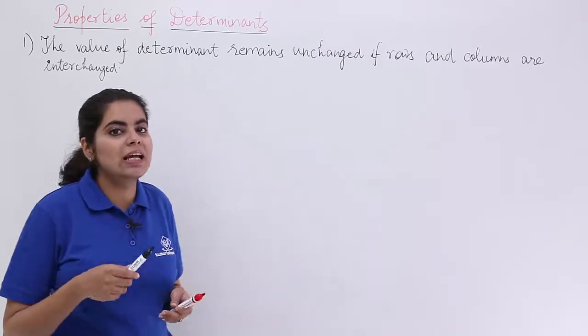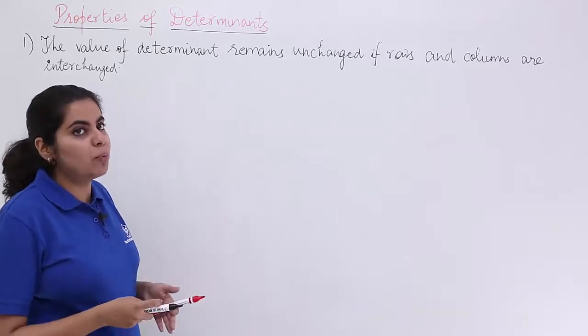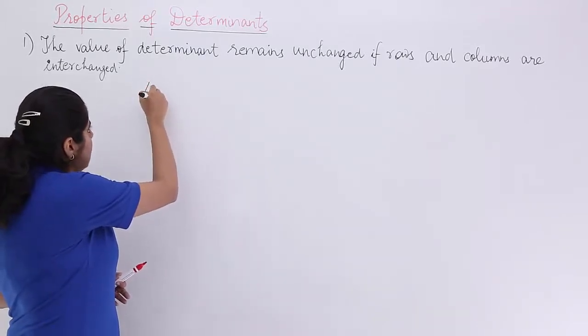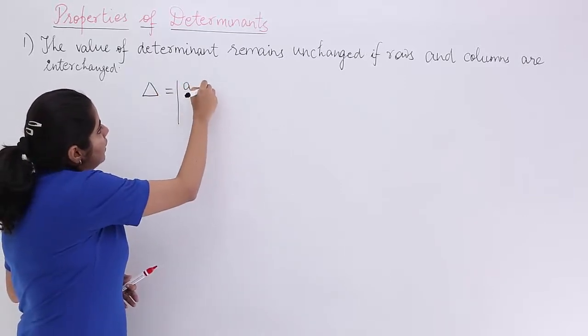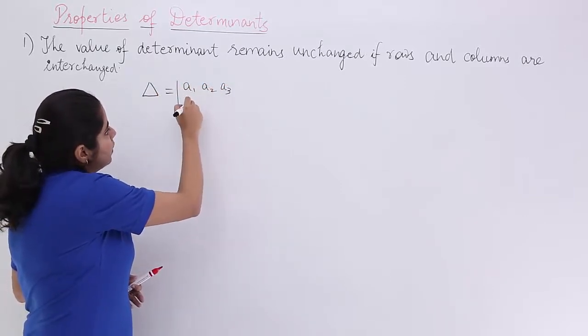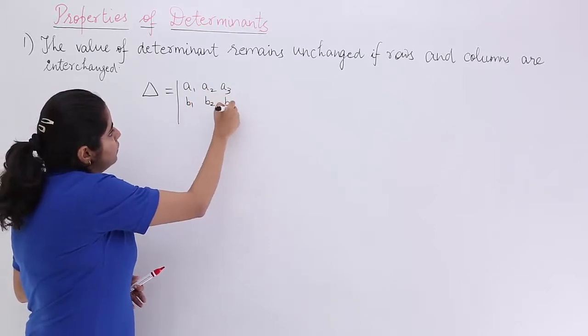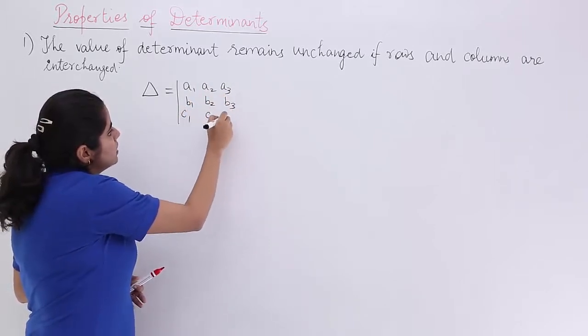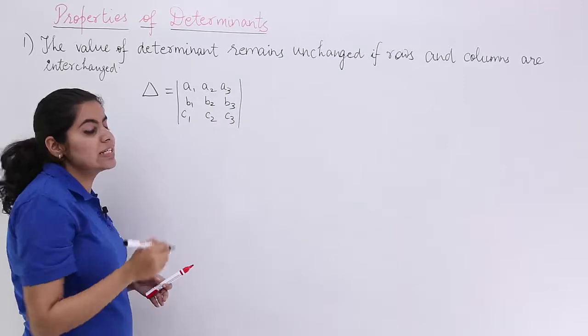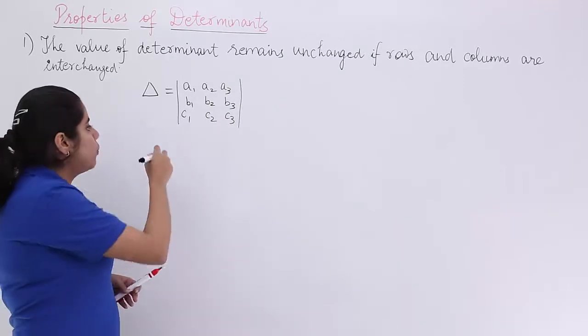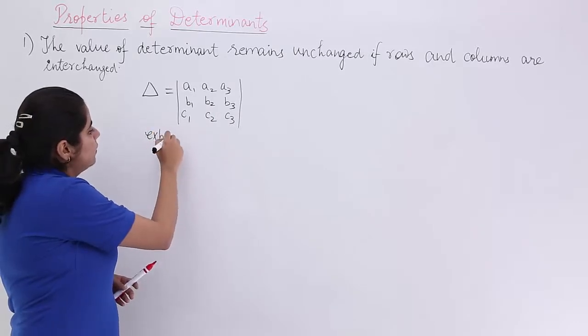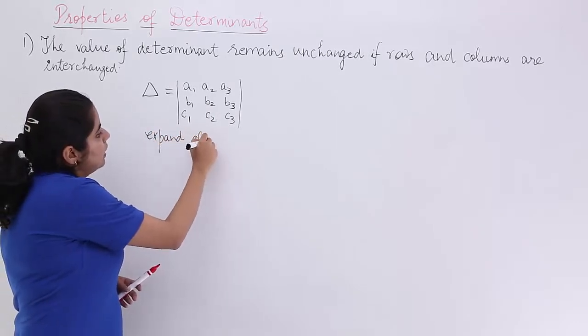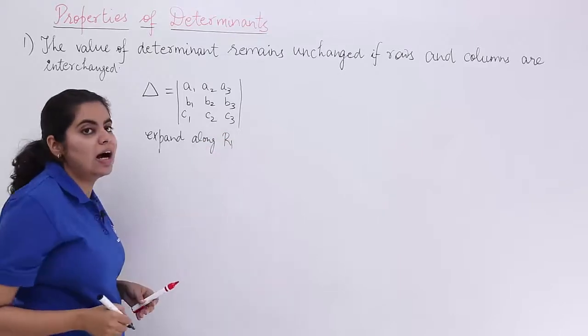We will be taking a standard general form of determinant. We have a determinant say Δ and that determinant is having a1, a2, a3, b1, b2, b3, c1, c2, c3 as its rows. Now, what do you need to do to evaluate this determinant? You need to basically expand. So, let's expand along row 1, R1.